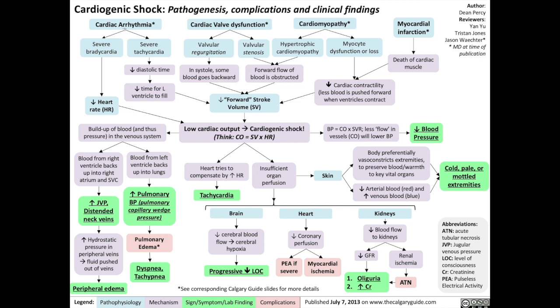First, cardiac arrhythmia can involve a severe bradycardia, which means a reduced heart rate, which by definition leads to reduced cardiac output. Cardiac arrhythmias can also involve severe tachycardias, which reduces the time the heart spends in diastole, and therefore reduces the time for the left ventricle to fill, resulting in reduced stroke volume, or the amount of blood the heart is able to pump forward into the arteries, which results in reduced cardiac output.